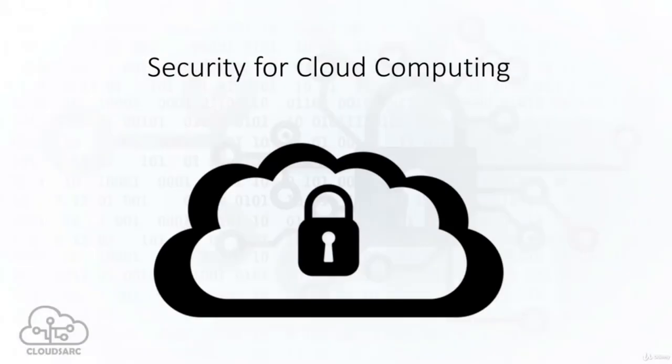This section will cover some basics about cloud computing and how security architecture is different in the cloud. I will talk about the essential characteristics of the cloud and how it differs from an on-premises environment. I will also discuss different delivery and deployment models in the cloud and how responsibility for security is shared between the cloud provider and you as a consumer. I will also explain how we can find information about how the cloud provider has secured the cloud services that you use.